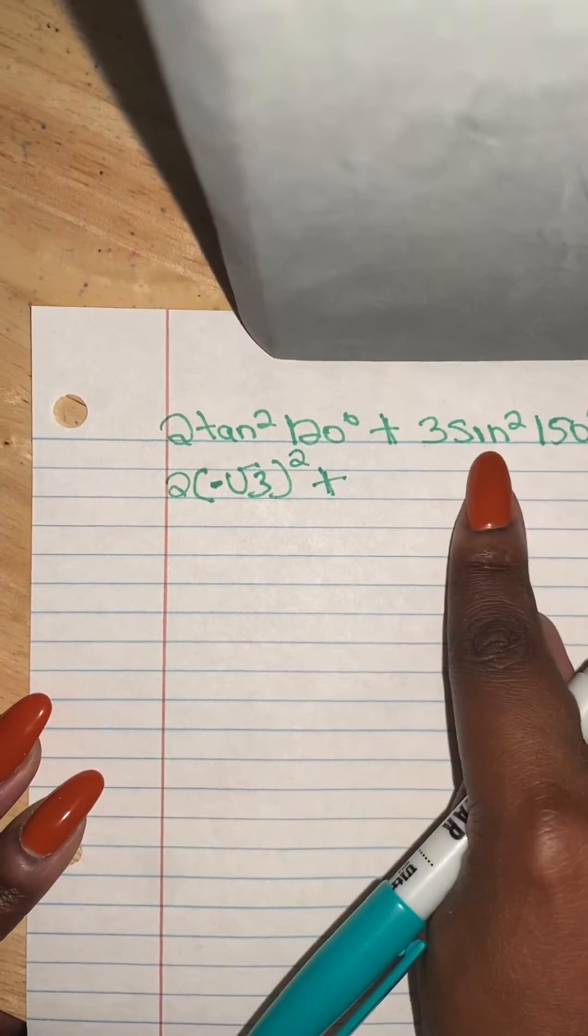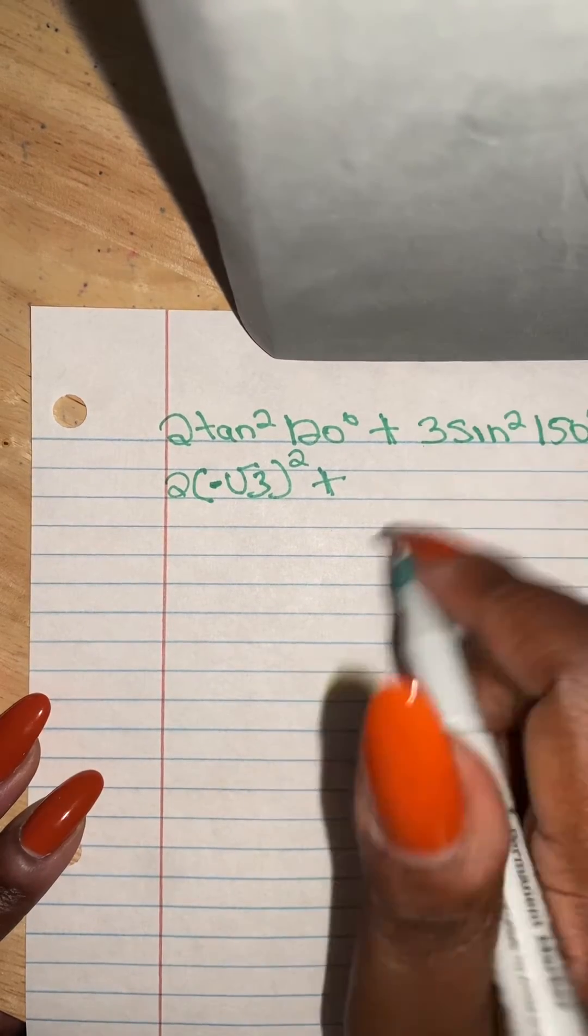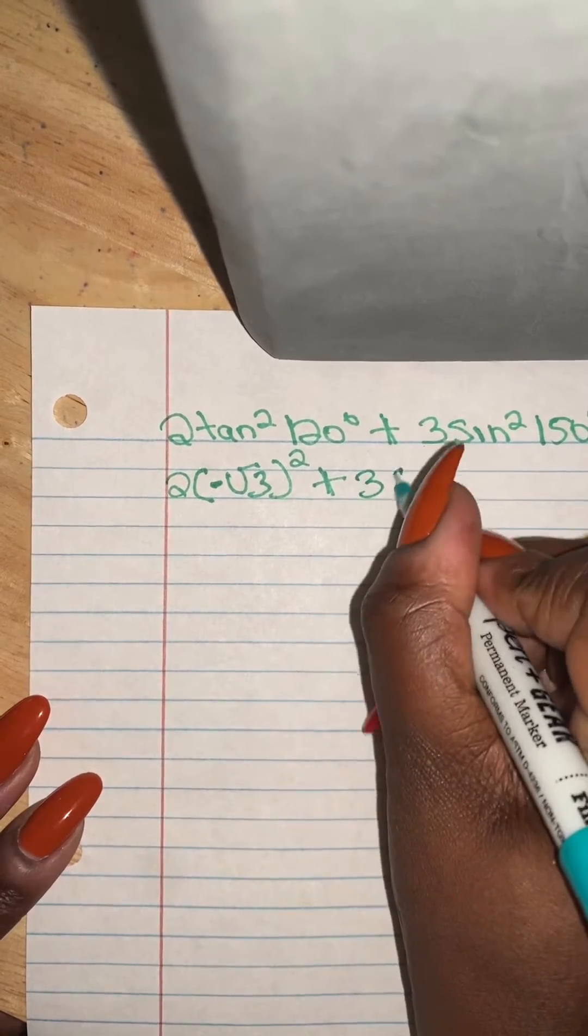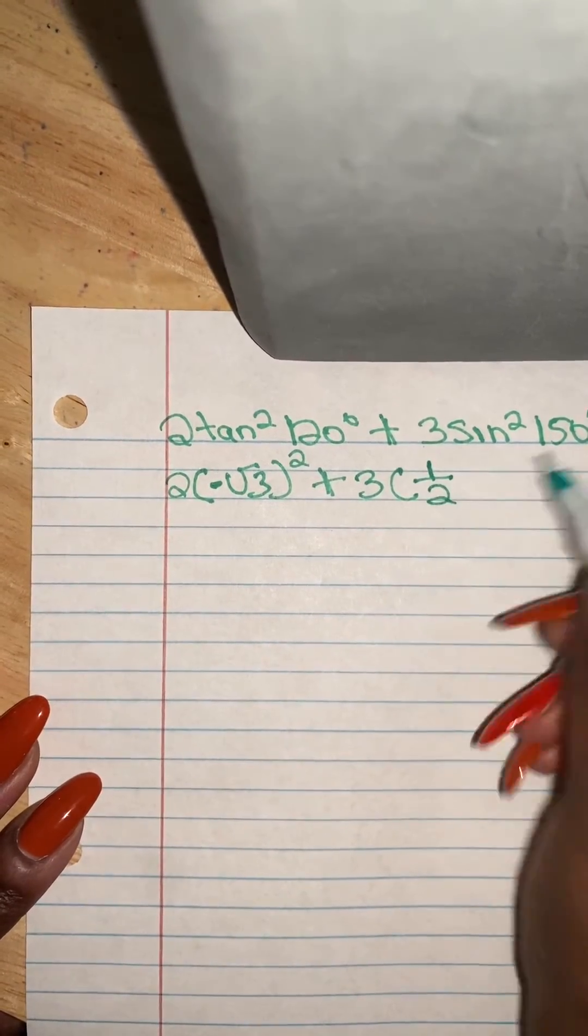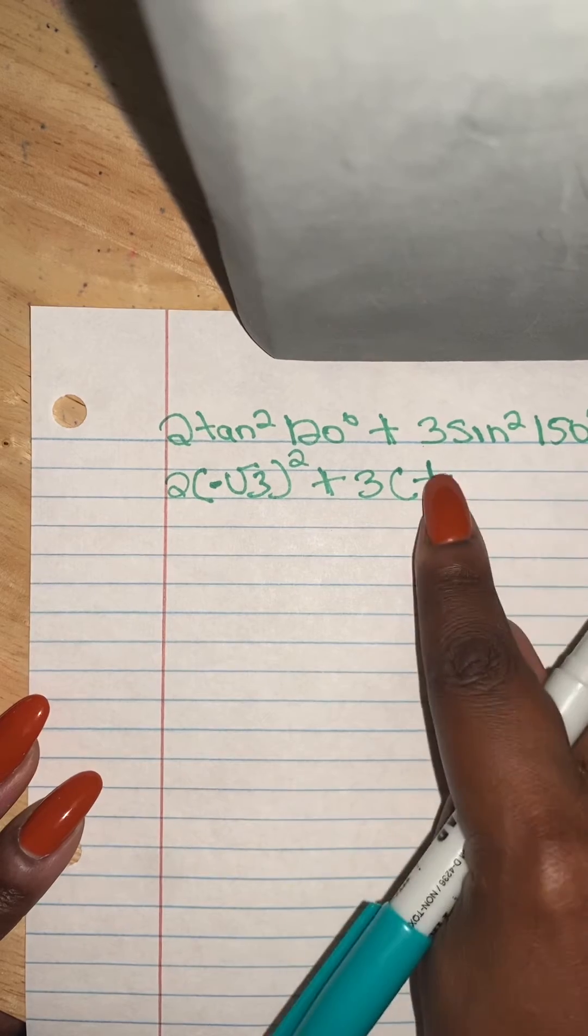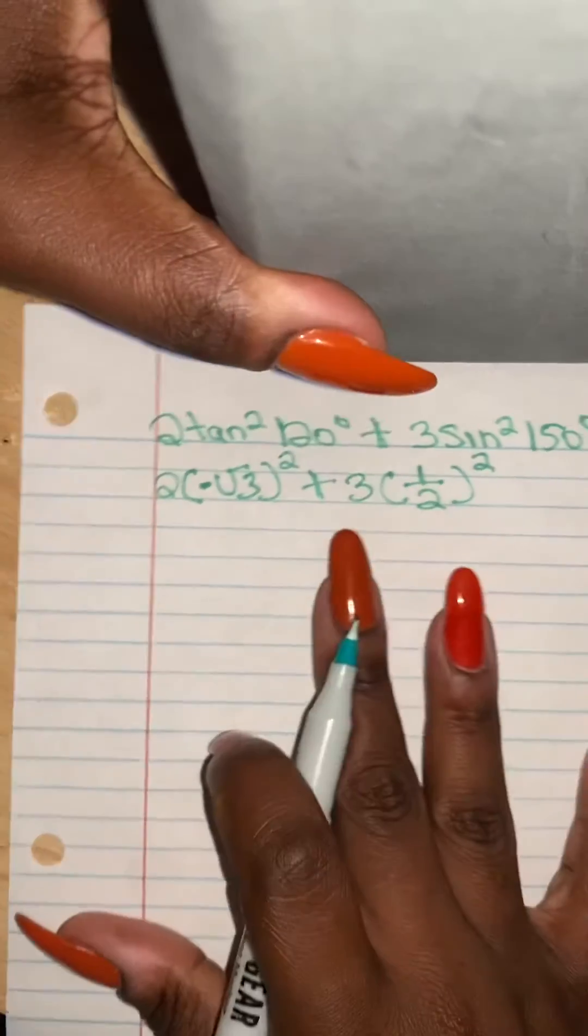What is the value of sine of 150 degrees? It's about one half. So we continue on, 3, and we put one half because the value of sine 150 degrees is one half. And we also keep the exponent going.